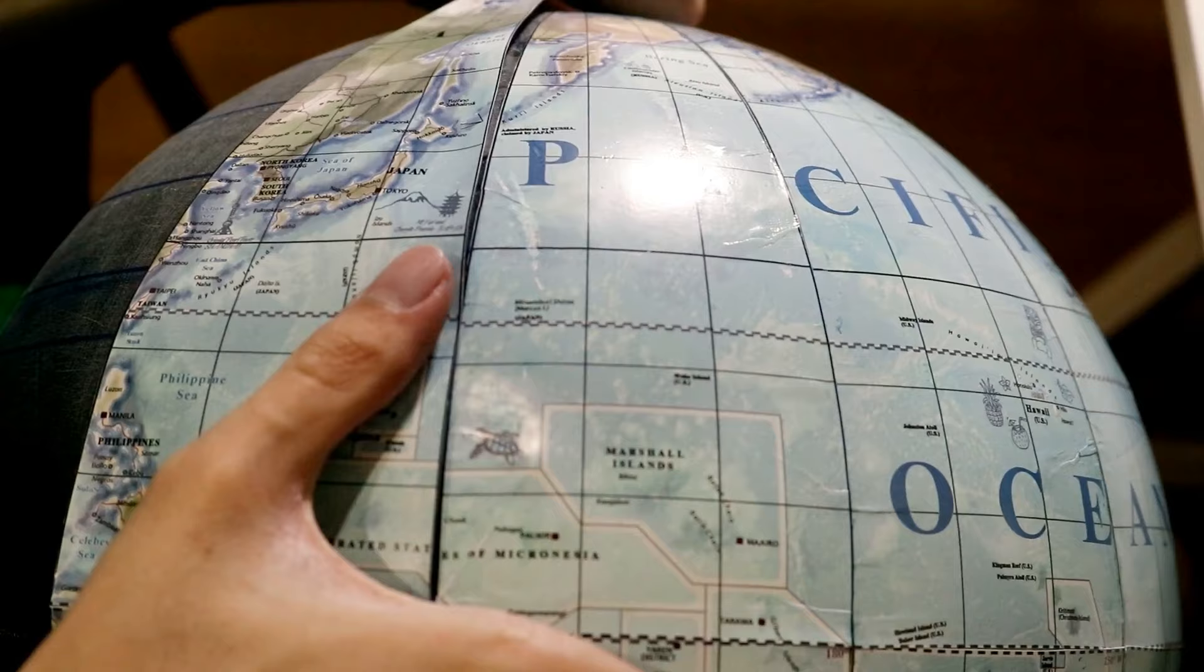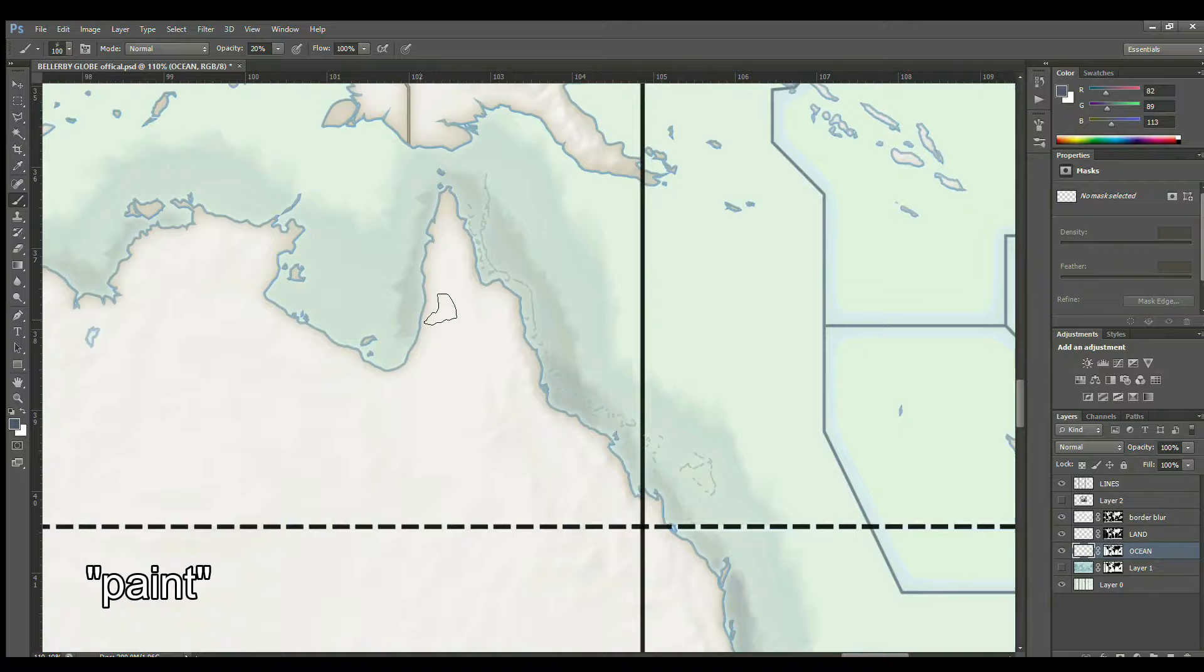Then I dissect the map into separate layers of mainland, borders, and text in Illustrator, also changing the font to my favorite style. Then I paint the map in Photoshop with a custom brush for the watercolor effect.